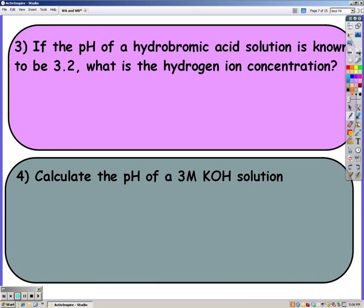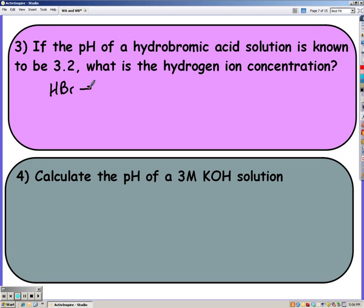On number three, they gave you the pH and want to know the hydrogen ion concentration. So you can solve this one just like we did a few days ago. So when you write your equation, you know pH, you can calculate hydrogen.